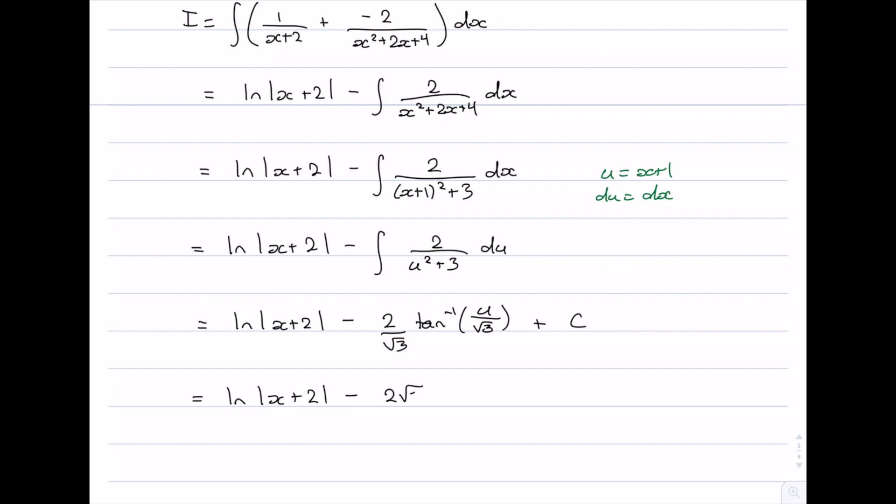And then we have to change everything back into x's. We might as well rationalize here. So it's ln|x+2| - (2/√3)tan⁻¹((x+1)/√3) plus C. And that is our final answer.